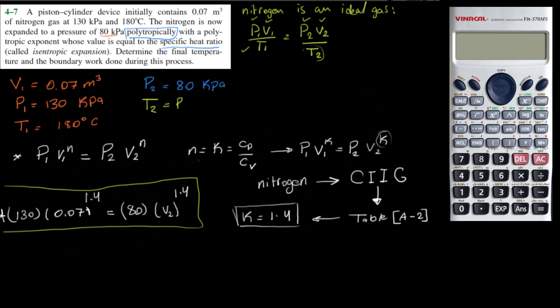So yes, now after obtaining the value we will have V2, and then easily we can obtain the value of the temperature, the second temperature. So let's plug this into the calculator to get the value of V2. So real fast I'm gonna do that here: 130 multiplied by 0.07 to the power of 1.4, divided by 80 to the power of 1 over 1.4. So here is our V2, it's 0.099016 meter cubed.